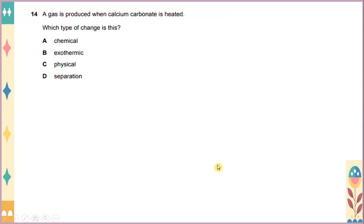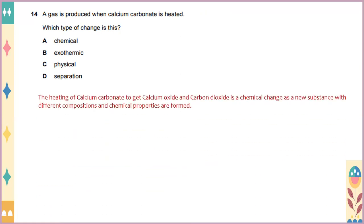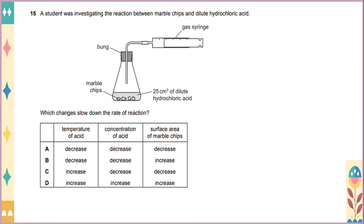A gas is produced when calcium carbonate is heated. Which type of change is this? I would say this is a chemical. The heating of calcium carbonate to get calcium oxide and carbon dioxide is a chemical change, as a new substance with different composition and chemical properties are formed. So the answer will be A. A student was investigating the reactions between marble chips and dilute hydrochloric acid, where you have marble chips at the bottom and it's been diluted under hydrochloric acid, 25 cm³. And this is the gas syringe. Which changes slow down the rate of the reaction? In terms of the temperature of the acid, it will decrease. And the concentration of the acid is also decreased. And the surface area of marble chips is also decreased.